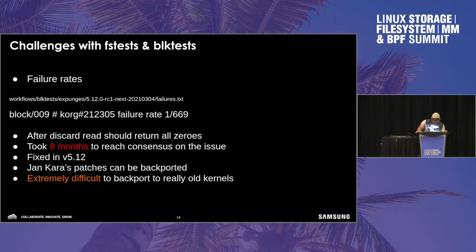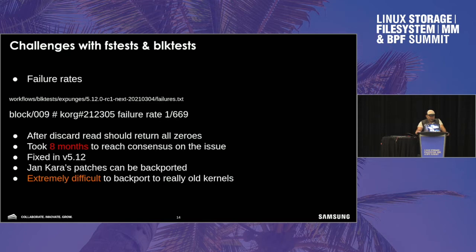Here's another example — a block 009 failure that failed one out of 669 times. When this was reported, it was really not understood what was going on, and it took about eight months to figure it out — it was kind of just ignored. This was fixed in 5.12, and Yankara has a series of patches that can be backported. But as mentioned in Amir's last talk about merging stable fixes, it's also complex to merge some changes. You can't really merge Yankara's patches as-is for stable. Fixing some of these issues on older kernels is really difficult.